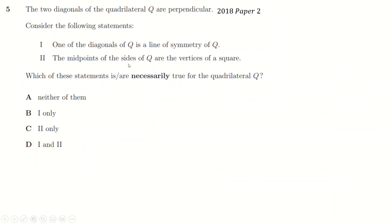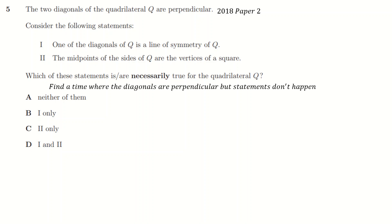Another question — a necessary question this time, about a quadrilateral with perpendicular diagonals. We've got two diagonals of a quadrilateral and we're saying: can we find a case where the diagonals are perpendicular but these statements don't happen? Because then those statements are not necessarily true for quadrilateral Q. Quadrilateral Q can exist with perpendicular diagonals but without satisfying these other conditions, so they're not necessarily true.